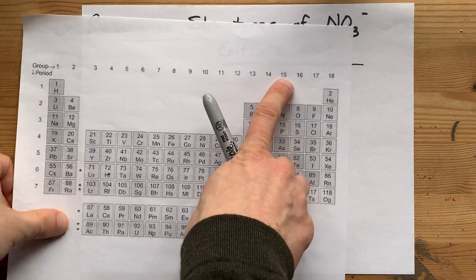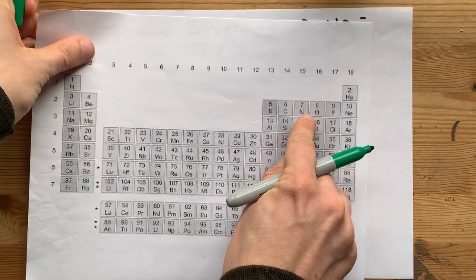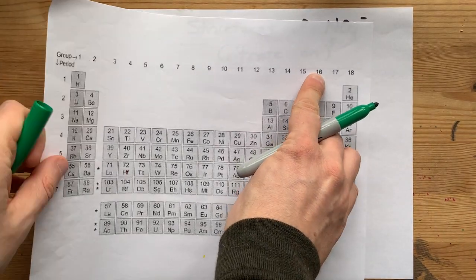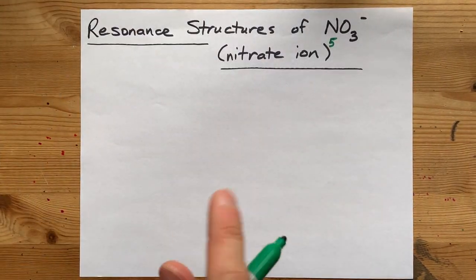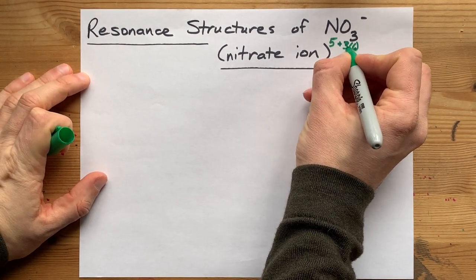Nitrogen is in group 15, so it brings 5 valence electrons with it. Oxygen in group 16 brings 6 valence electrons each. And we have 3 of them, so that's 18 total.